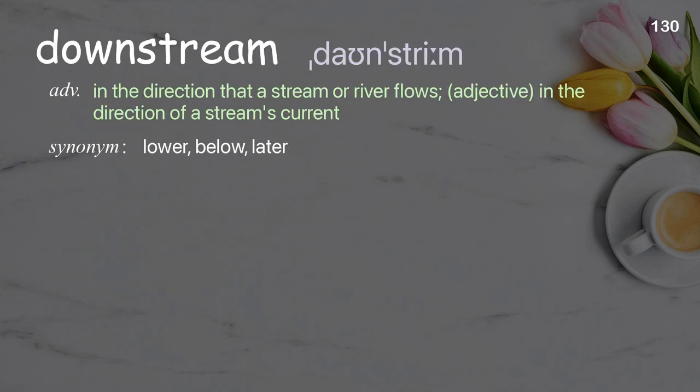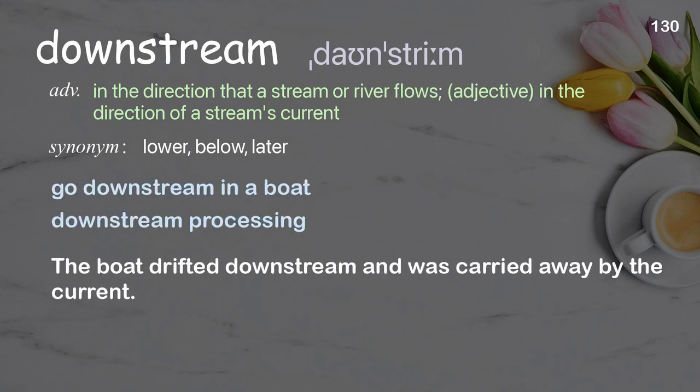Downstream: in the direction that a stream or river flows. Adjective: in the direction of a stream's current. Examples: go downstream in a boat, downstream processing. The boat drifted downstream and was carried away by the current.